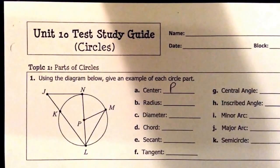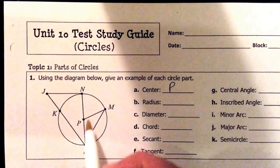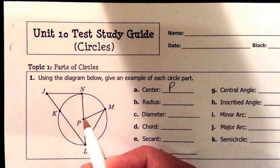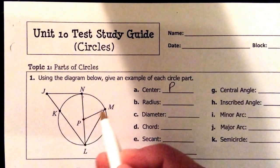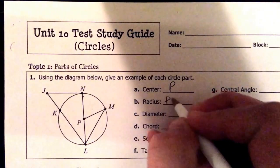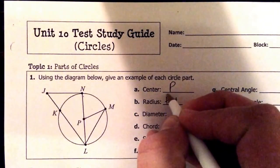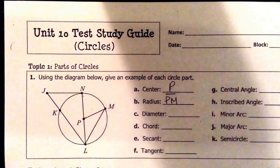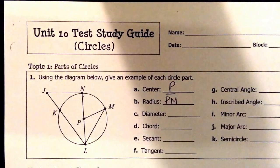Our radius, we have multiple options for radius. Our radius just means that it goes from the center to the edge of the circle. So we have either PN, PM, or PL. Either of those work. I'm going to use PM. Make sure for your notation you put the bar above it with no arrows, indicating that it's a segment.